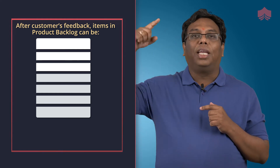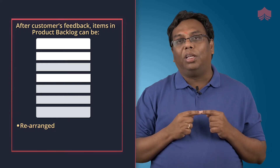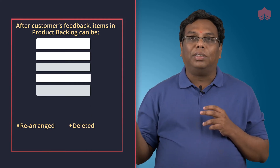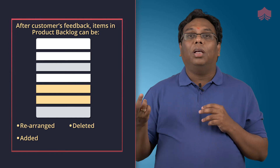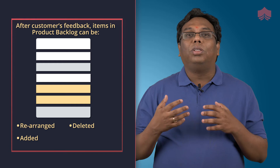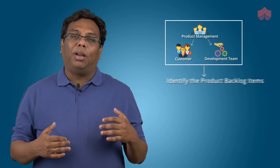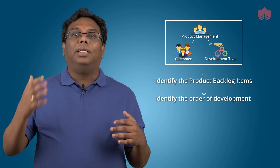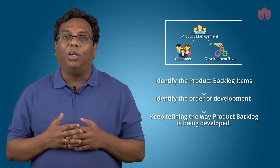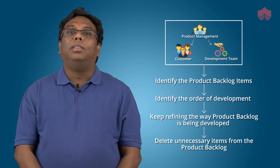Every time there is feedback from the customer, you might have to rearrange the product backlog items. Some things might get deleted in the process, some user stories might get added in between development. While discussing a user story, you might come up with more details which need to be captured in the product backlog description. You might have to refine them — for example, if a story is long enough that it cannot be developed within one particular iteration, the development team might ask the product management team to split that story. Work with the engineering team and the customer, identify the product backlog items, identify in which order they are supposed to be developed, and keep refining the backlog, deleting what is no longer necessary.